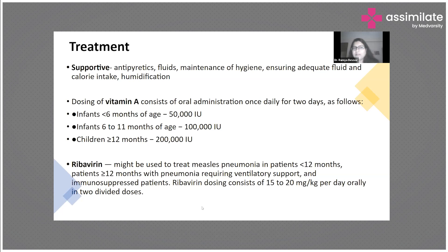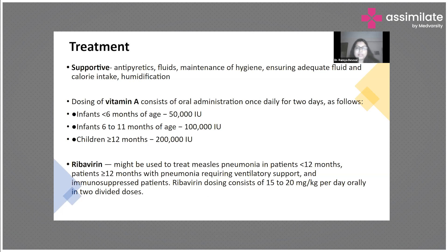There is also a drug called ribavirin, which can be used for measles pneumonia. It is usually used in babies less than 12 months, or in children over 12 months if the child is on ventilator support, although it is not very commonly used. It is a newer drug being used in treatment of measles-associated pneumonia, particularly in immunosuppressed patients. The dosing is 15 to 20 mg per kg per day orally, given in two divided doses.